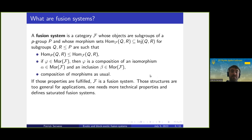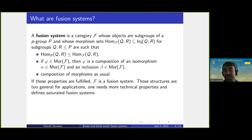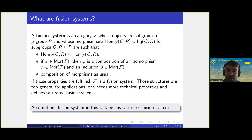If those axioms are fulfilled we call F a fusion system, but the structures obtained are too general for applications. We need two more technical properties called the Sylow property and the extension property. A fusion system fulfilling those two additional properties is called a saturated fusion system. From now on, whenever I say fusion system I will mean saturated fusion system.